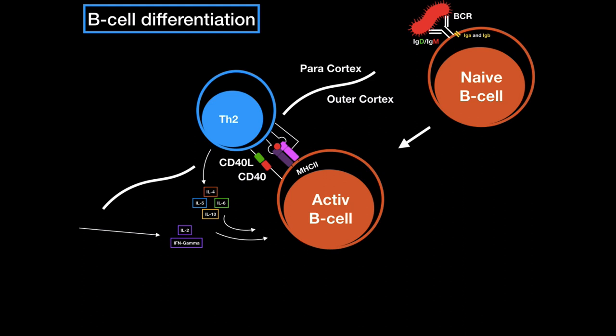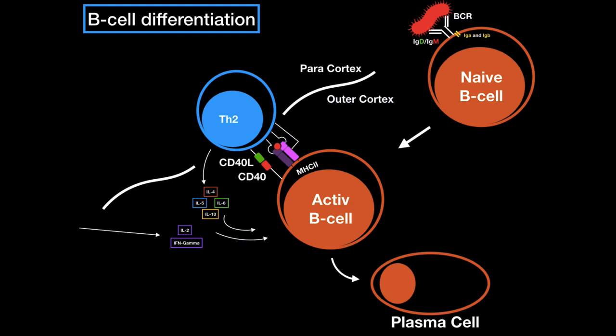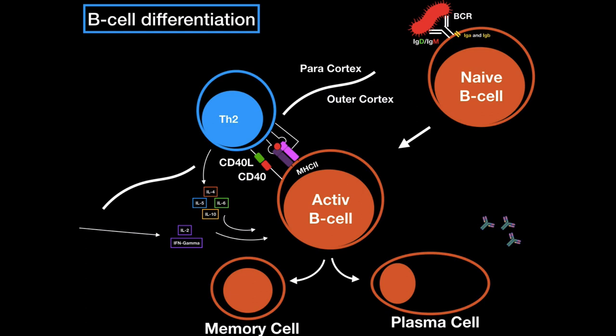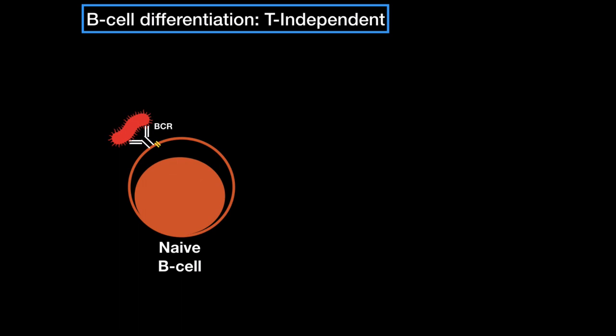The B cell doesn't receive all of those signals at the same time — it depends on which immunoglobulin the body needs, and then it releases the specific type of interleukin accordingly. After that, it undergoes an isotype switch and proliferates into a plasma cell, which secretes antibodies, and also into a memory cell. Keep in mind there is another way for the B cell to differentiate without being stimulated by the T helper cell — this is called T-independent B cell differentiation. Carbohydrates are very good at triggering it — like lipopolysaccharides from gram-negative bacteria, for example.